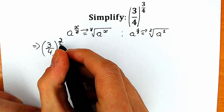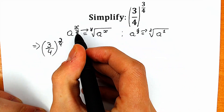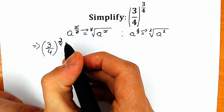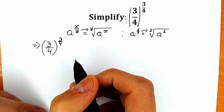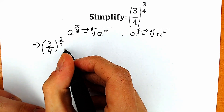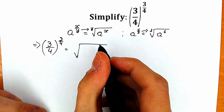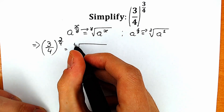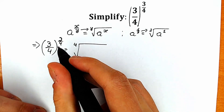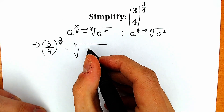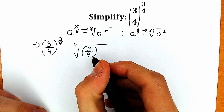According to this rule, the expression in our denominator is the power of the root. In our case, we have four in our denominator, so we are talking about the fourth root of three-fourths to the power three.